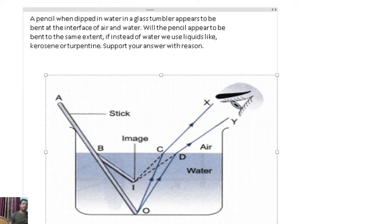In this question it is given: a pencil when dipped in water in a glass tumbler appears to be bent at the interface of air and water. Will the pencil appear to be bent to the same extent if instead of water we use liquids like kerosene or turpentine? Support your answer with reason.